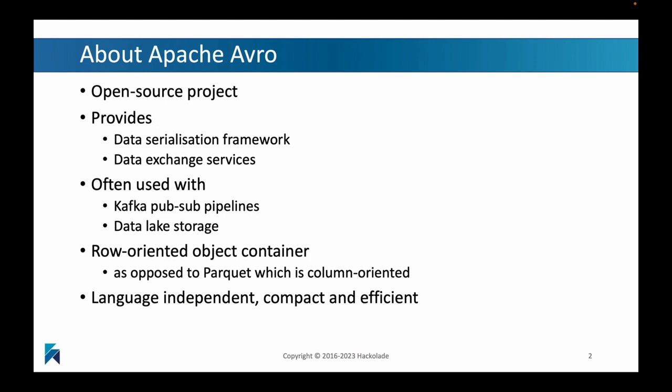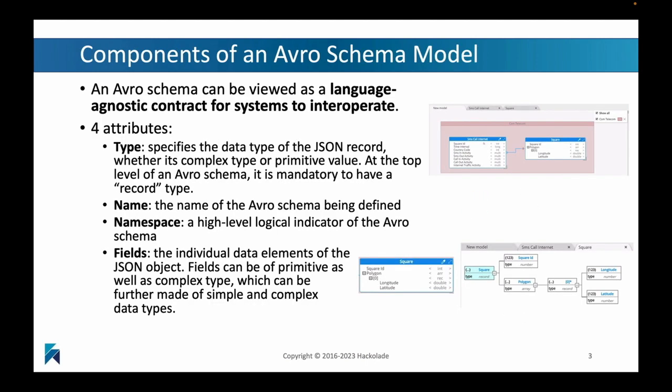The nice thing about Avro is that it's actually language-independent. It's quite compact and therefore also quite efficient in its usage. When you develop an Avro schema model using the Hackolade toolset, you will see that it's kind of like a language-agnostic contract for how different systems can interoperate. For every schema, you will find that there are four types of attributes: the type, the specific data type of the JSON record; the name of the Avro schema; the namespace, which is the higher-level logical indicator; and all of the individual fields.